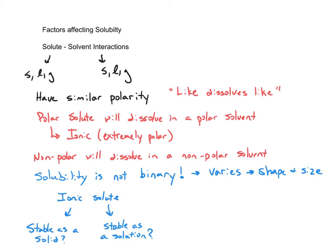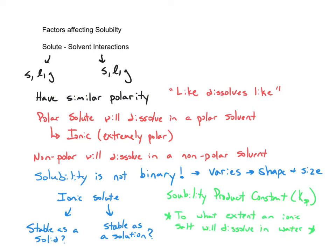Chemists have come up with something called the solubility product constant, or KSP, which is a number that describes to what extent an ionic salt will dissolve in water. The numbers range from very large to very small. We don't really concern ourselves with very large numbers because large KSP means soluble. What we really focus on is small numbers, because these tell us how likely something is to not dissolve. The smaller the number, the less likely it is to dissolve.